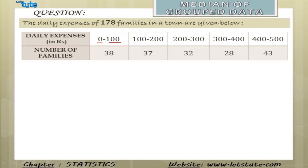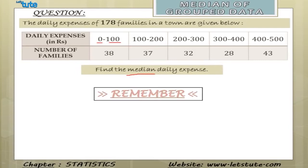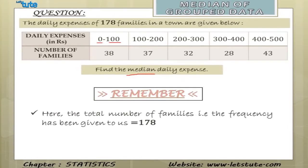Now, we need to find the median daily expense of all these families. Before we move on to find the median daily expense, we need to keep certain things in mind. First of all, we have been provided with the frequency that is the total number of families, that is 178 families. Also, we will find something called as cumulative frequency distribution, which will help us to find the median of this grouped data. We will understand the cumulative frequency distribution as we move further.